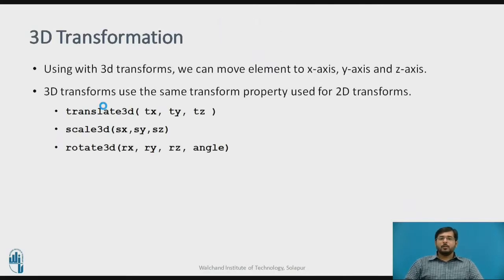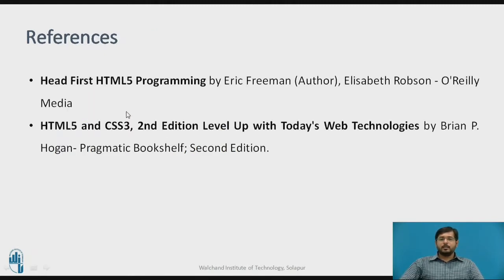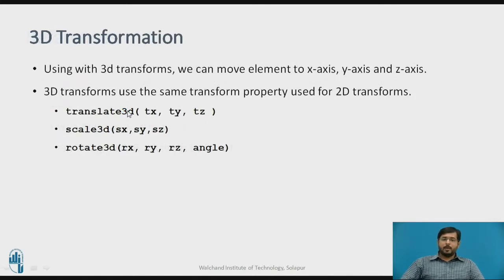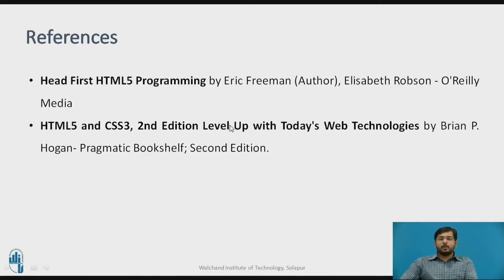Moving forward to 3D transformation. 3D transformation is similar to what 2D transformation is. It will have one extra element that is tz which defines the z-axis of the element. It will have translate3D. This is the syntax with the parameters tx, ty and tz. Similarly, scale3D to scale an element and to rotate an element in 3-dimensional. This will have 4 parameters that is x-axis, y-axis and z-axis with a given angle to rotate.